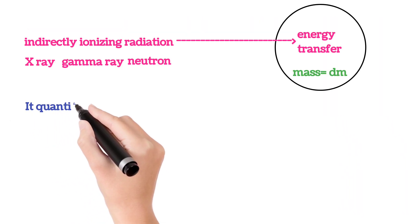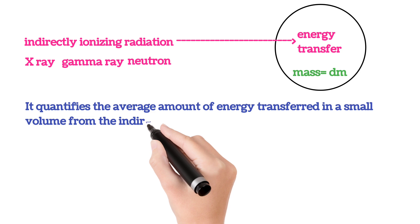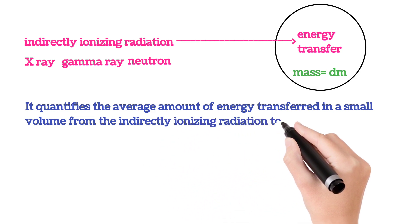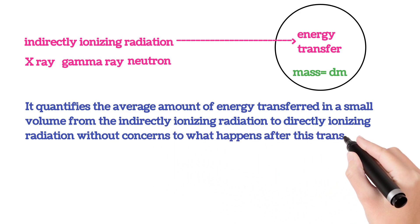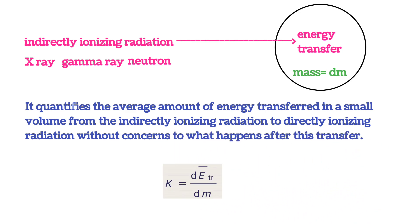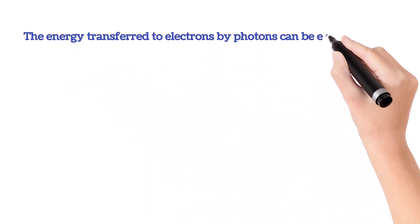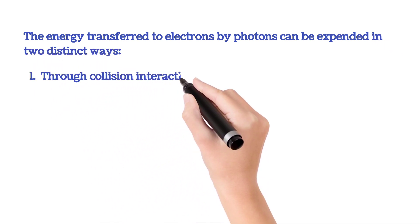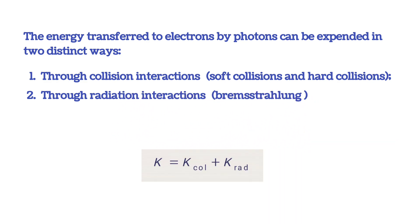KERMA quantifies the average amount of energy transferred in a small volume from indirectly ionizing radiation to directly ionizing radiation, without concern for what happens after this transfer. The energy transferred to electrons by photons can be expended in two distinct ways: through collision interactions and through radiative interactions. The total KERMA is therefore divided into two components — collision KERMA and radiation KERMA.